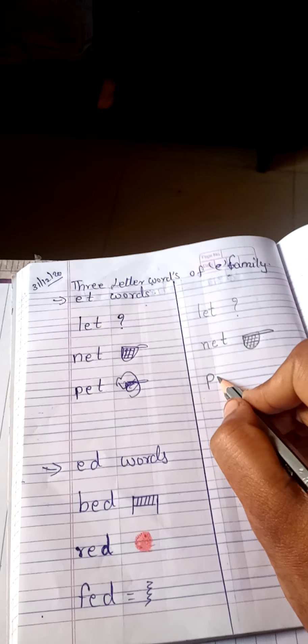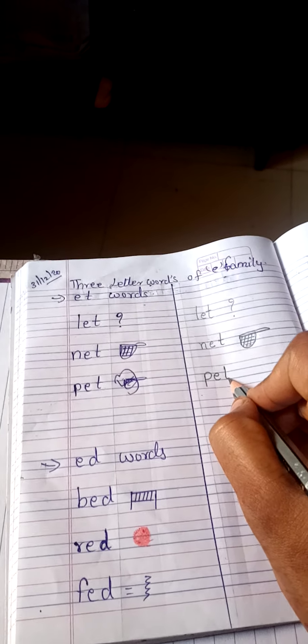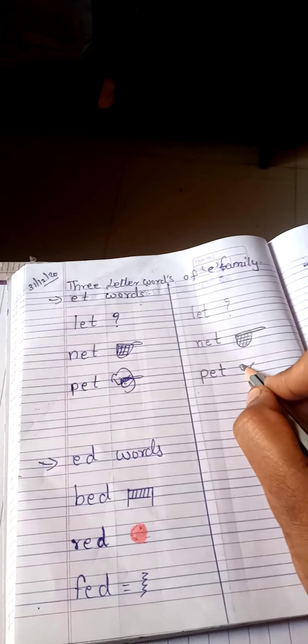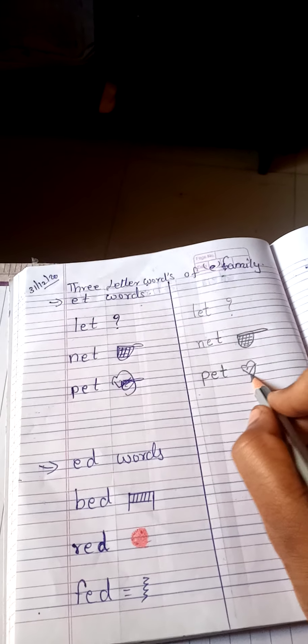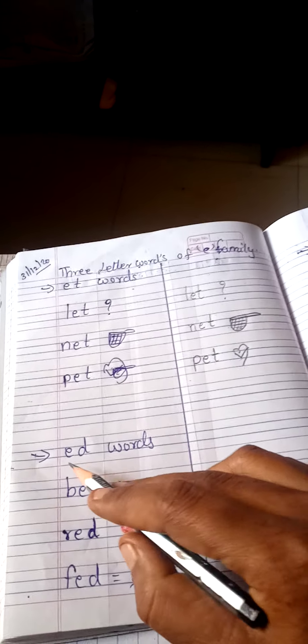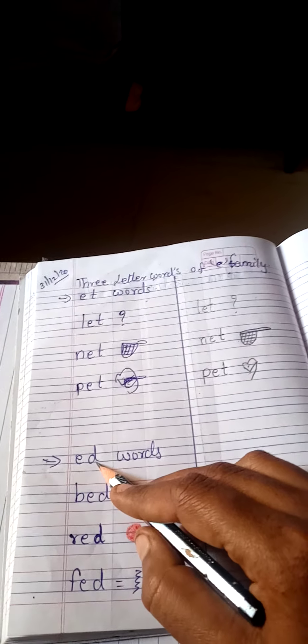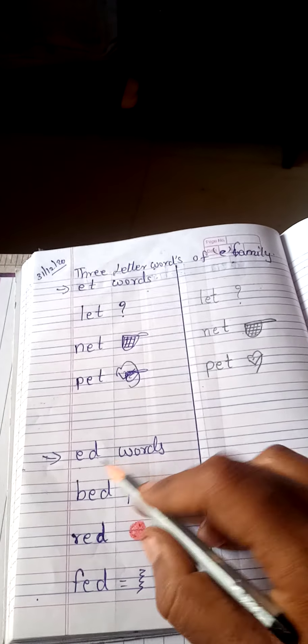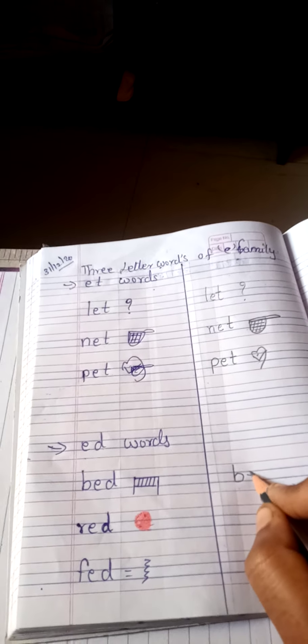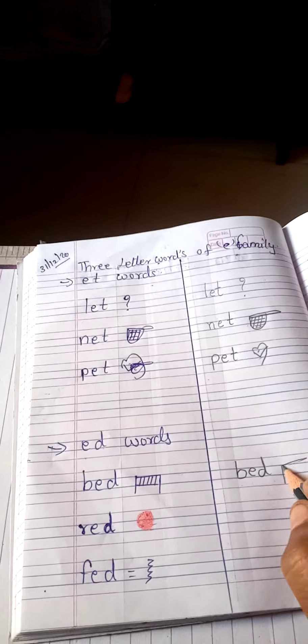Now E-D words. E-D words. So B-E-D, bed. We sleep on bed. So draw bed.